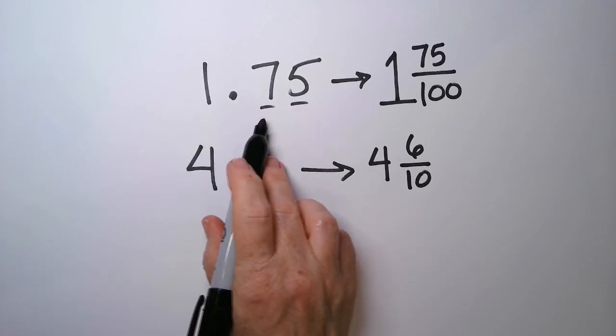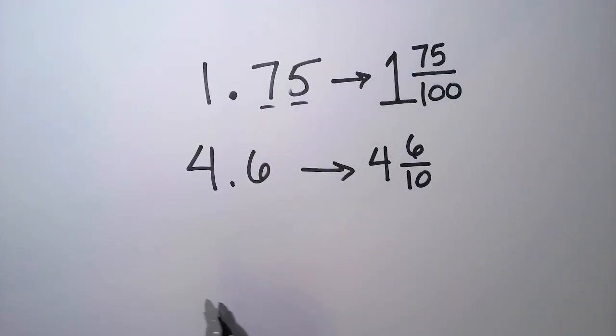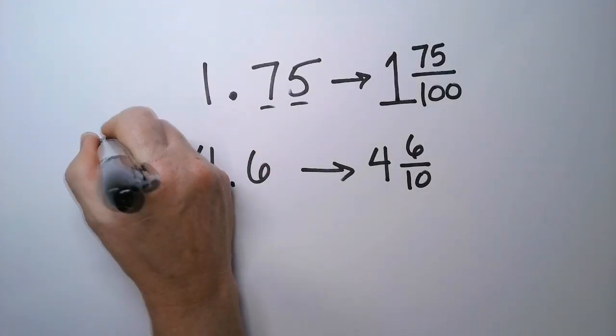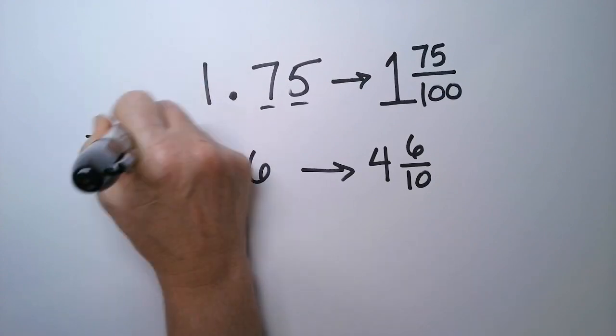And then we have tenths, hundredths, thousandths, ten thousandths and onward. There is no once. You don't have to worry about that. There's no such thing as a once.